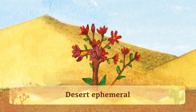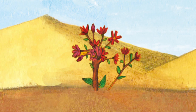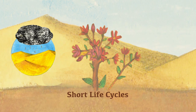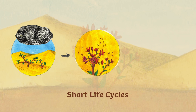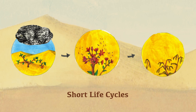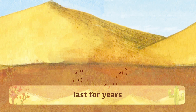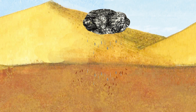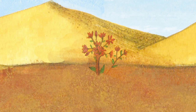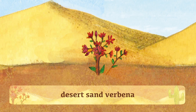A third type of desert plant is called the desert ephemeral. These plants have very short life cycles. They don't sprout until there is sufficient rainfall. Once it rains, they quickly grow out of the ground and lay their seeds before dying. The seeds can last for years in dry conditions, waiting for the next rainy period. An example of a desert ephemeral is the desert sand verbena.